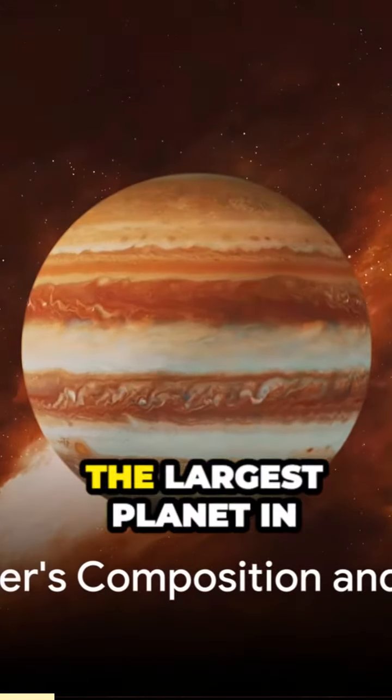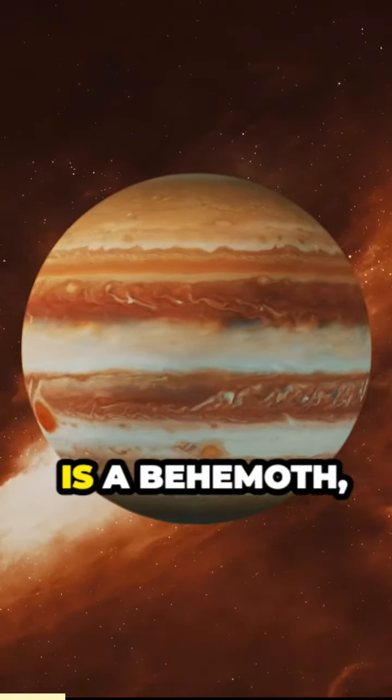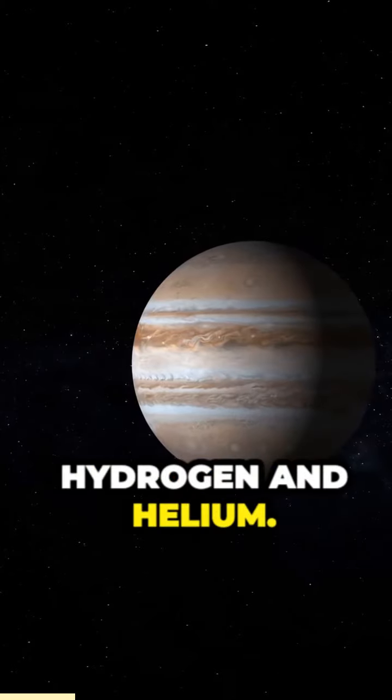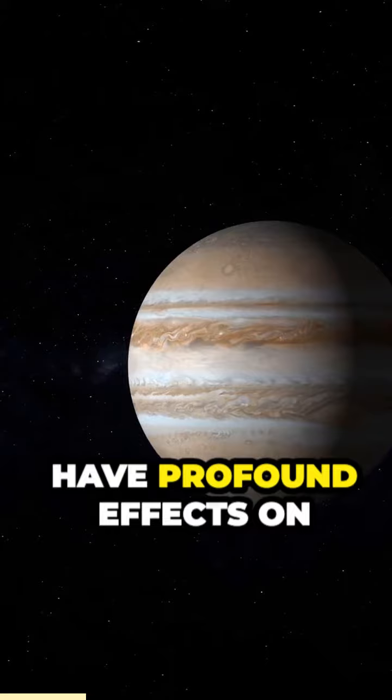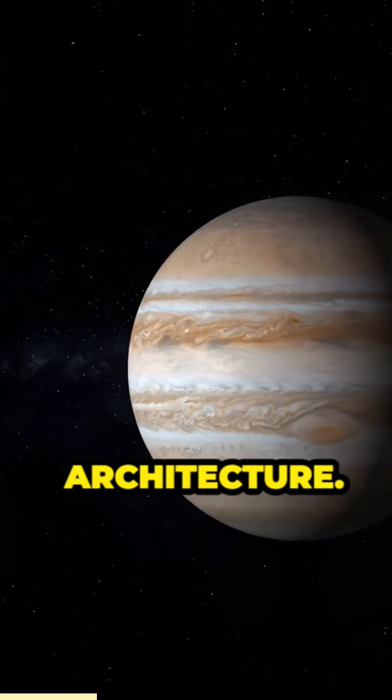Jupiter, the largest planet in our solar system, is a behemoth composed mostly of hydrogen and helium. Its vast size and mass have profound effects on its neighbors and the solar system's architecture.